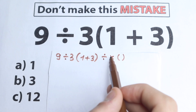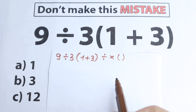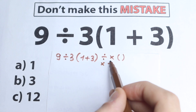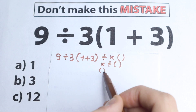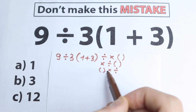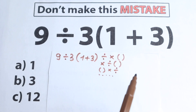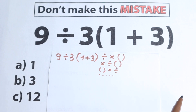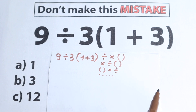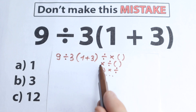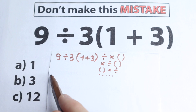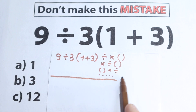We could start from division, then multiplication, then parentheses — left to right. Or we could start from multiplication, then division. Or maybe we start from parentheses first. As you can see, there are a lot of combinations, but in math we need one correct solution. We cannot have one question with three different correct answers, so we need to know the correct order of operations.